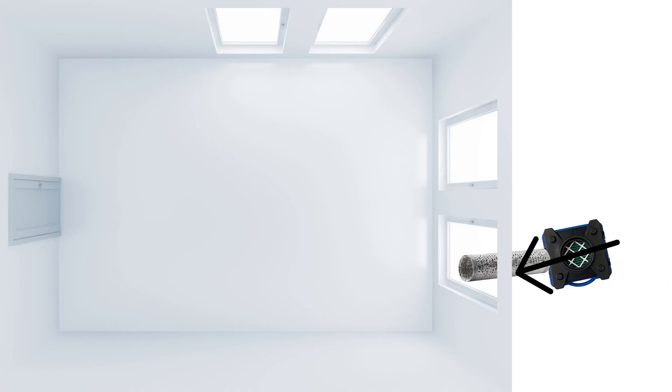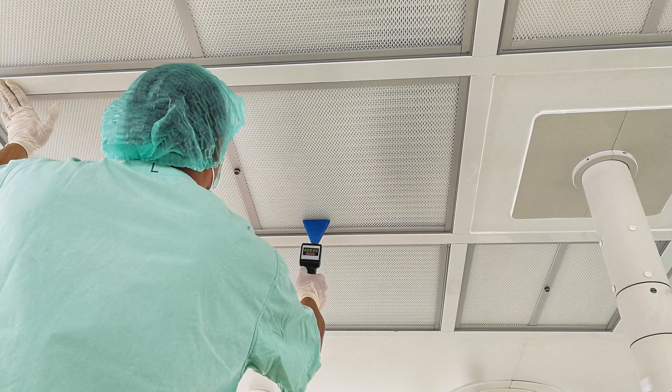Additionally, after a space is verified as clean, you can always place the area under positive pressure by having the unit outside the area and venting back in the clean air. This will help stop any unfiltered air from entering back into the area.